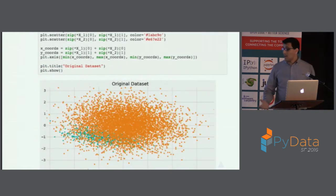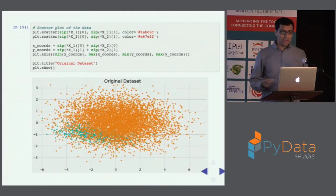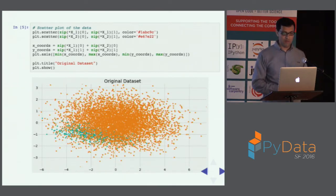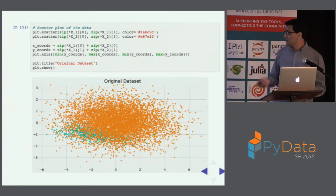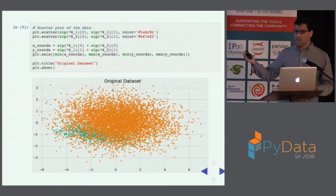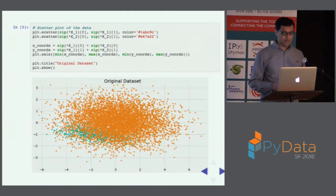Looking at the data, the orange dots represent the majority class and the blue dots the minority class. The majority class is overwhelming the dataset, but the data still forms two fairly distinct clusters. If we care about performance on the minority class using a linear classifier, we have a good idea of where we'd like our decision boundary to be to capture most minority class examples.